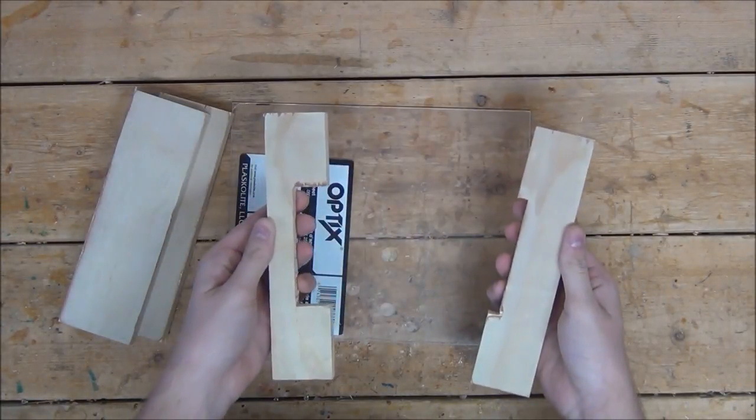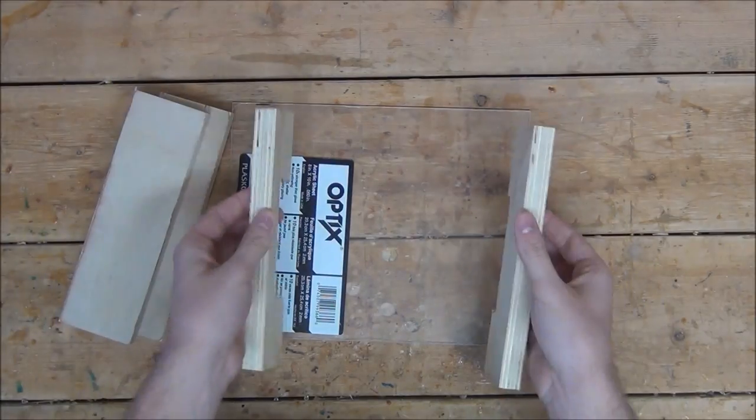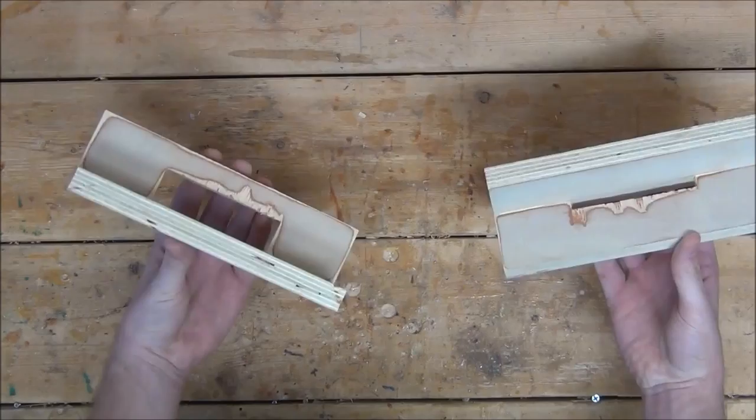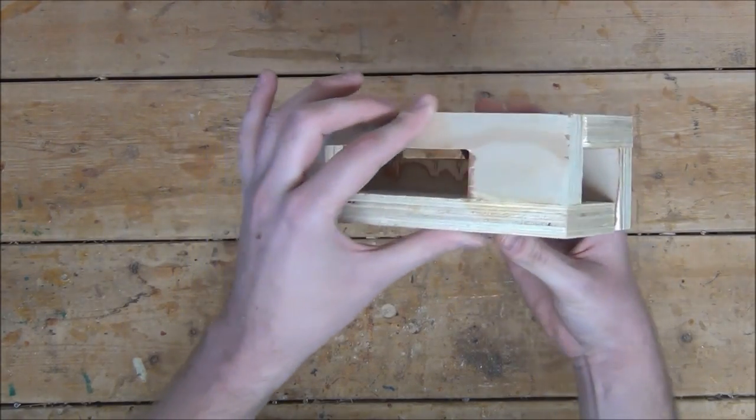Now we're going to want to glue and nail down each smaller piece onto the end of a larger piece channel facing down. Next, we can connect both pieces, then glue and nail them together as well.